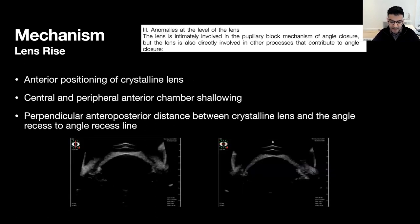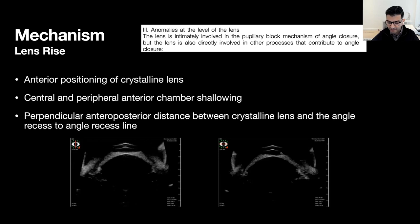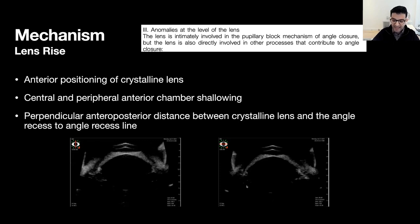Mechanism number two is lens rise — the phenomenon when the whole lens complex is anteriorly positioned, causing both central and peripheral anterior chamber shallowing. Formally, we define lens rise as a reduced perpendicular anterior-posterior distance between the crystalline lens and the angle recess-to-angle recess line. These patients typically have both peripherally and centrally shallow anterior chambers. One of my favorite terms in glaucoma management is the 'volcanic lens rise,' which occurs when the whole lens complex appears to have been pushed forward, typically found in smaller or relatively anterior micro-ophthalmic eyes.